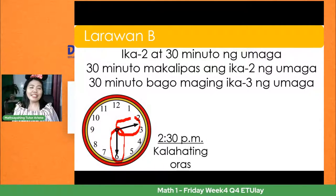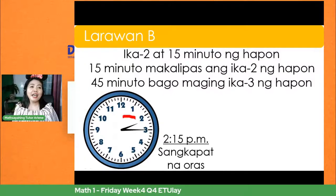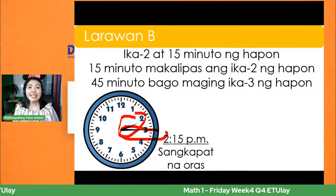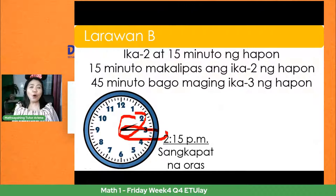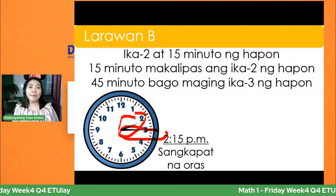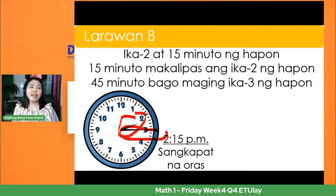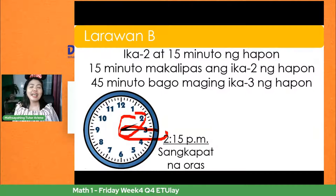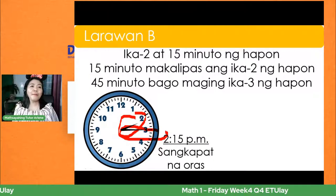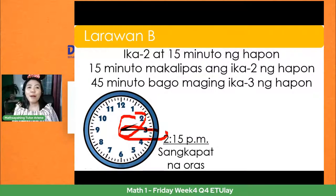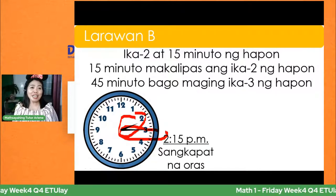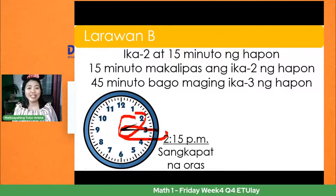Ito naman. Pagbasa natin dito sa English — ang maikling kamay ay 2, ang mahabang kamay ay nasa 3, which is 15 minutes. Ang basa natin ay 2:15. Sa Tagalog: ikalawa at labing limang minuto ng hapon, o labing limang minuto makalipas ang ikalawa ng hapon, or 45 minuto bago mag-ikatatlo ng hapon. Masyadong mahaba, di ba? Kaya ang ginagamit na natin ay English — nasabihin agad natin: 2:15.